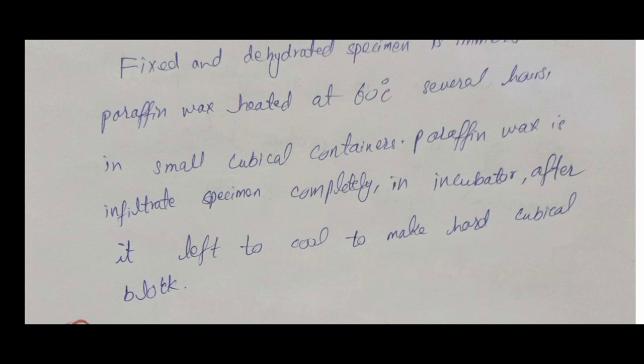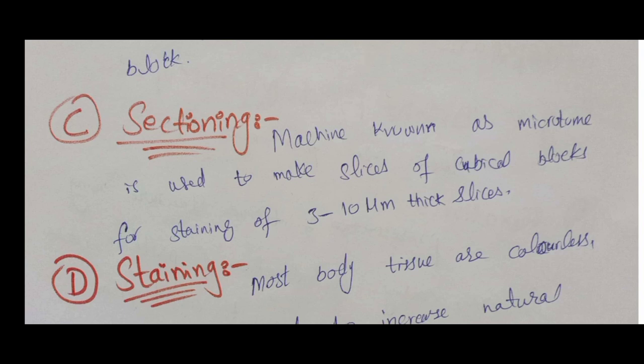The third stage is sectioning — sectioning means making thin slices of the specimen for observation. The machine used is known as the microtome, which cuts very small slices of the cubicle blocks for staining. The thickness of these sections may range from 3 to 10 micrometers.